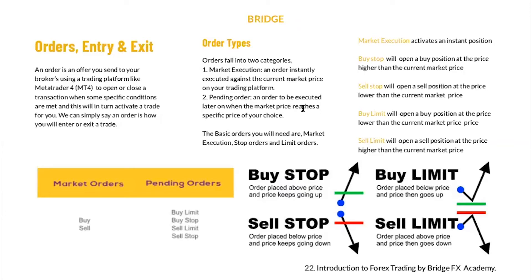Later on, when the market price reaches a specific price of your choice. For example, with a buy stop: this blue dot is where the market price is right now. You can see the arrow pointing upward — when we set a buy stop and put our entry price higher, we go into MetaTrader 4, select buy stop, and set our entry price there. That means we are telling MetaTrader 4 that whenever the price gets to this point, start buying for me.